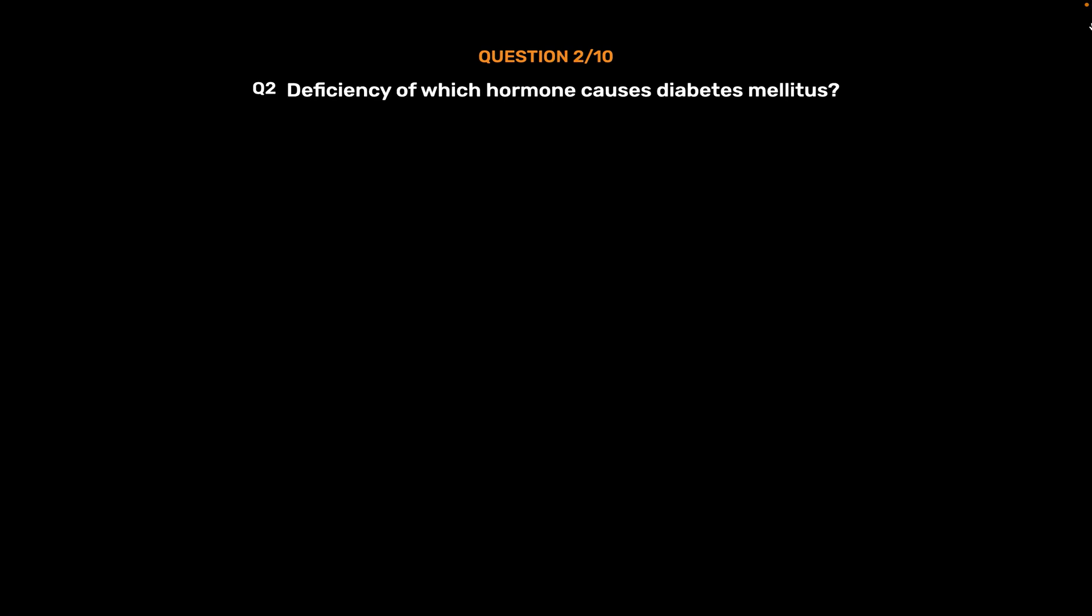Question 2: Deficiency of which hormone causes diabetes mellitus? Option A, Thyroxine; Option B, Insulin; Option C, Estrogen; Option D, Oxytocin. The correct answer is Option B, Insulin.